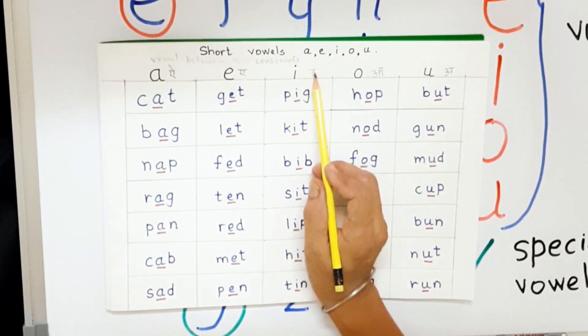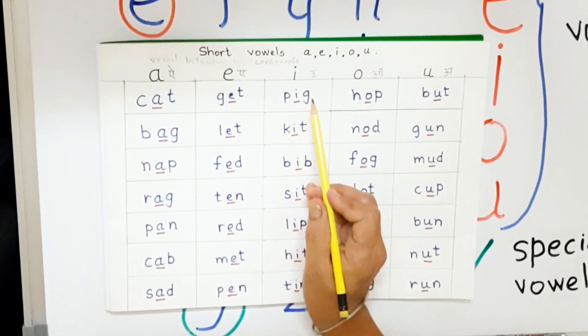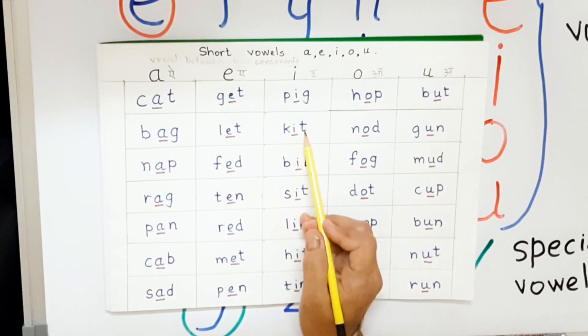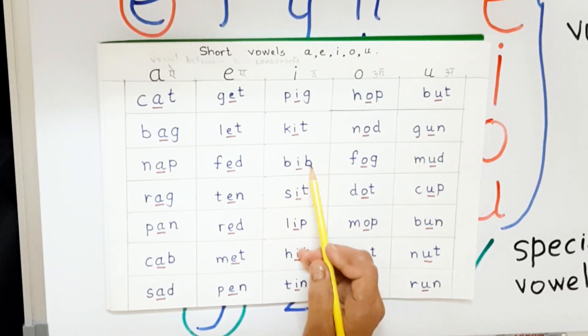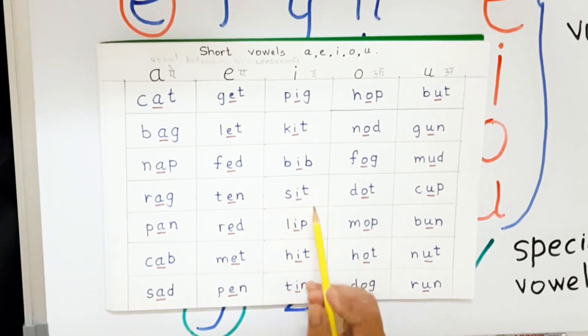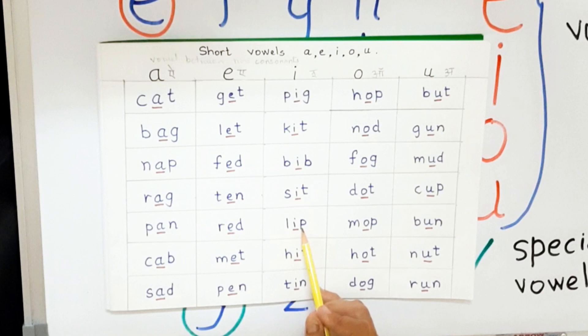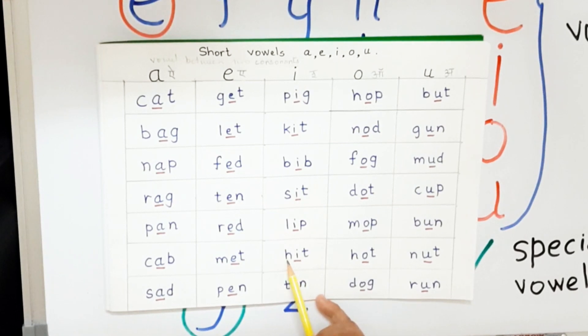Letter E makes the sound of E. Get, let, fed, ten, red, met, pen. Alphabet I makes the sound of I. Pig, kit, bib, sit, lip, hit, tin.